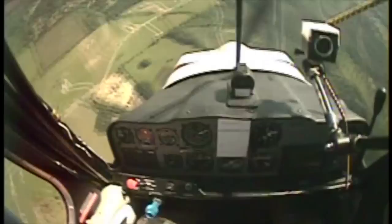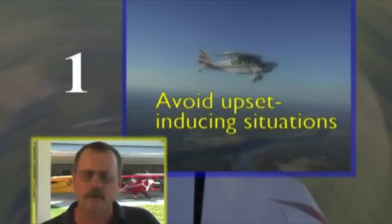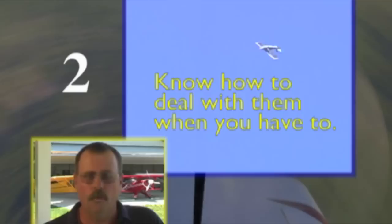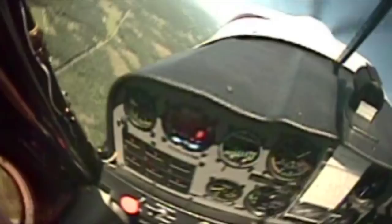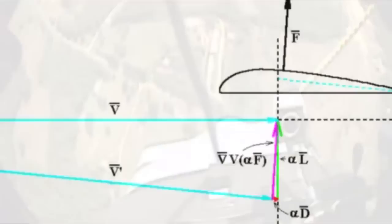When you receive upset training, you'll come to know how an airplane handles extreme flight situations, and perhaps most importantly, you'll learn what is not possible and what situations must be avoided completely. No training can ensure you'll recover from an inadvertent spin in the traffic pattern. Even the most skilled pilot requires sufficient altitude — about a thousand feet — to recover from a spin. By being trained first to avoid upset-inducing situations and second to know how to deal with them when you have to, we can go a long way toward safer skies. Many pilots have never studied lift vector management, managed rudder application, or explored the aircraft's characteristics at the edges of the flight envelope.